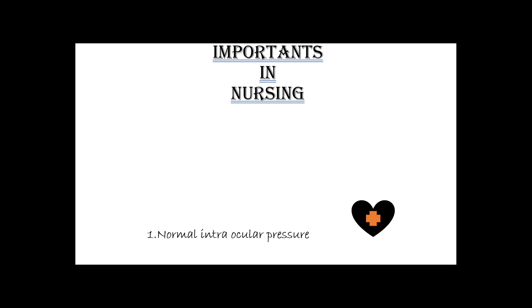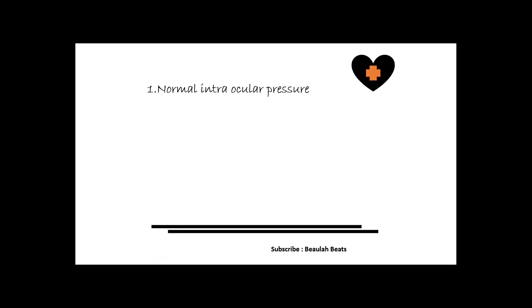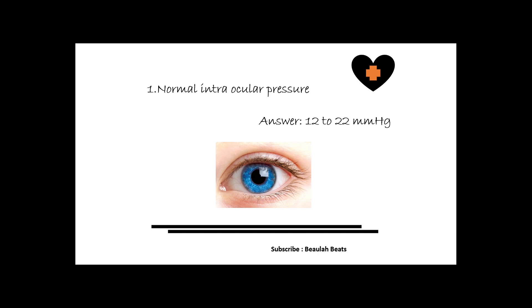Let's start the questions. The first question is: what is the normal intraocular pressure in the human eye? The intraocular pressure means the fluid pressure inside of the eye, and this is measured by the equipment of tonometry. It is commonly used to find out glaucoma patients. The answer: normal intraocular pressure is 12 to 22 mmHg.